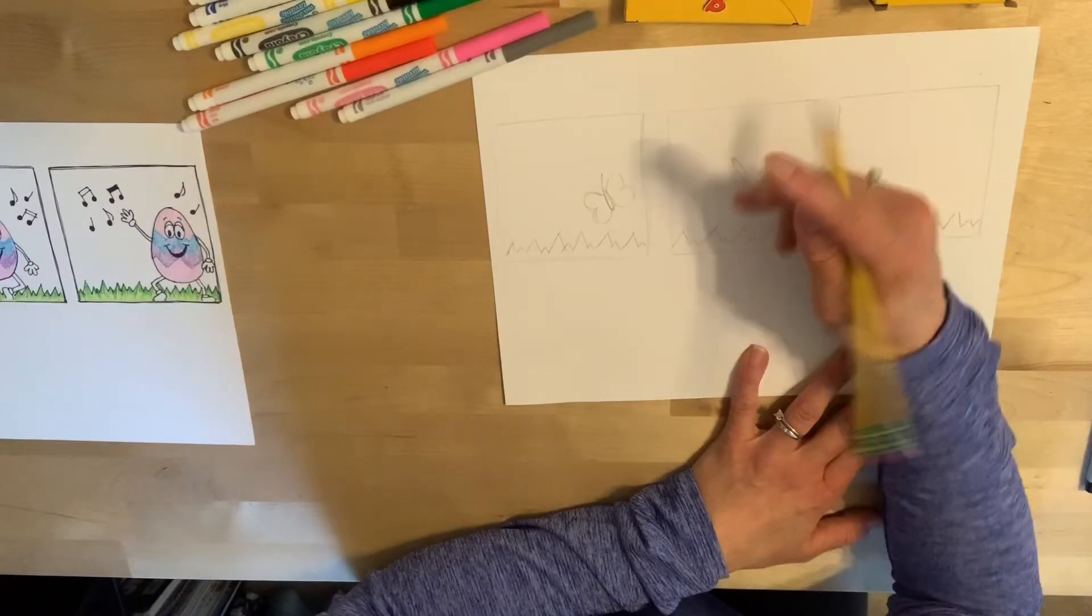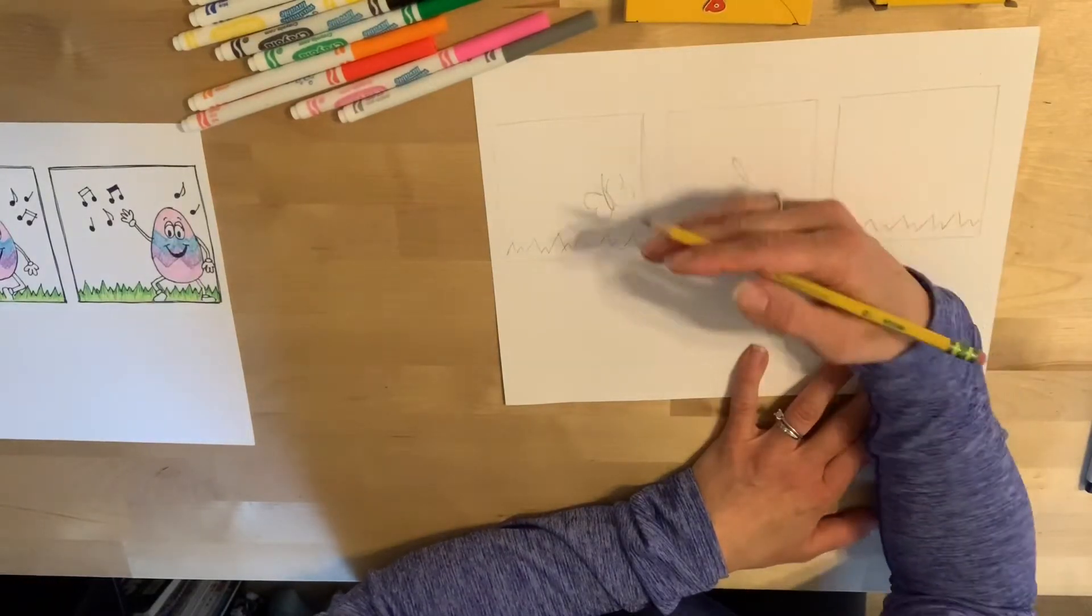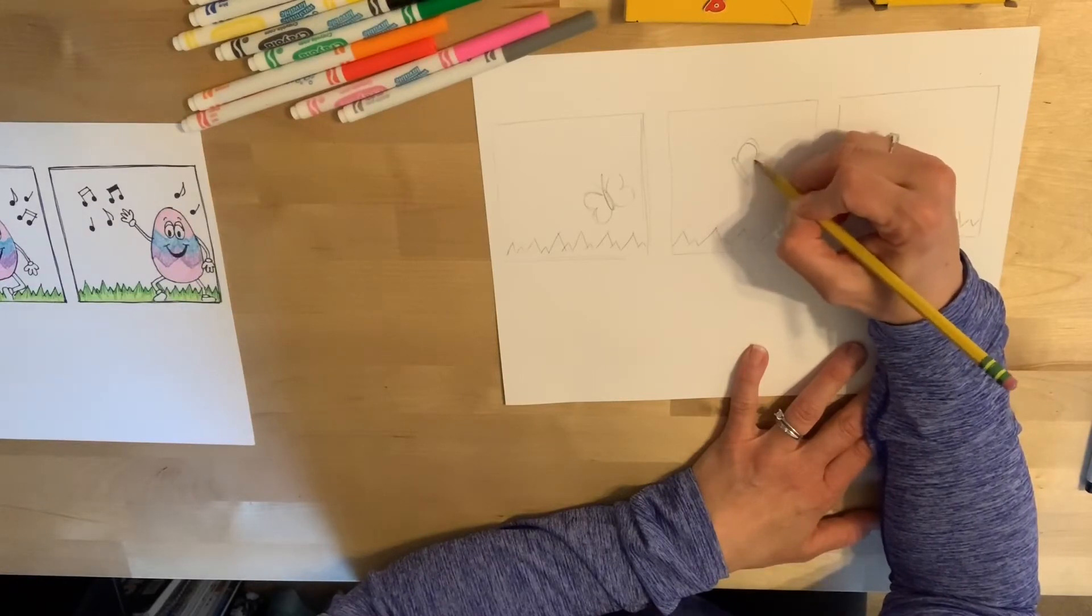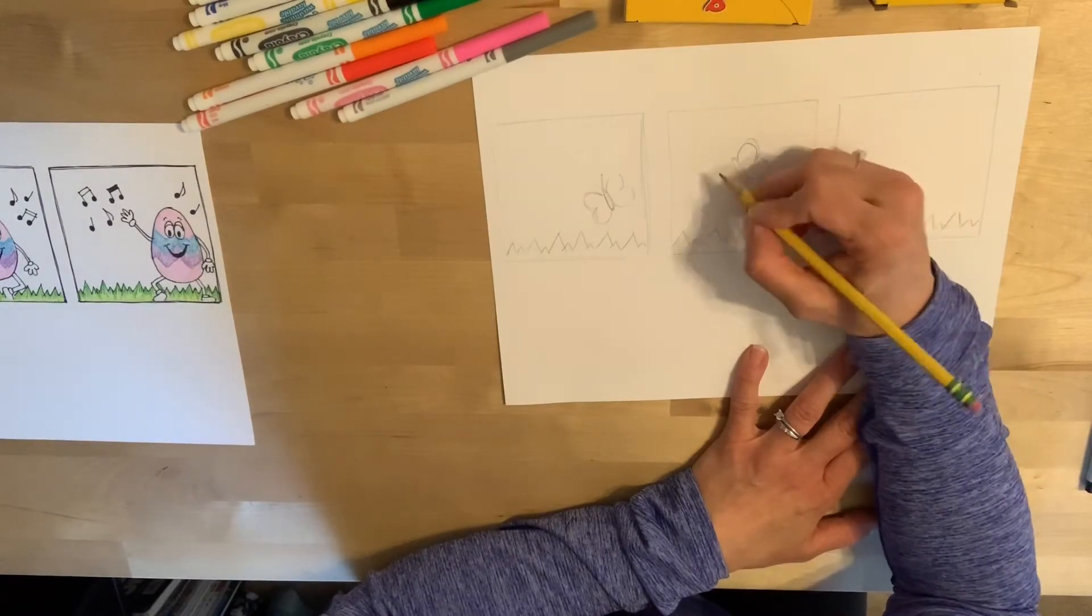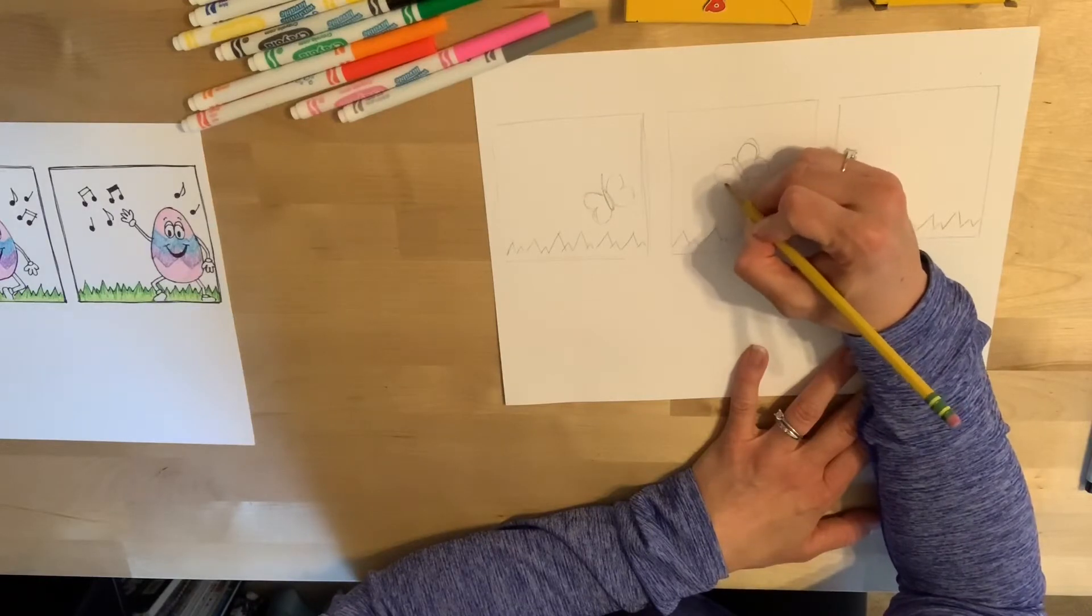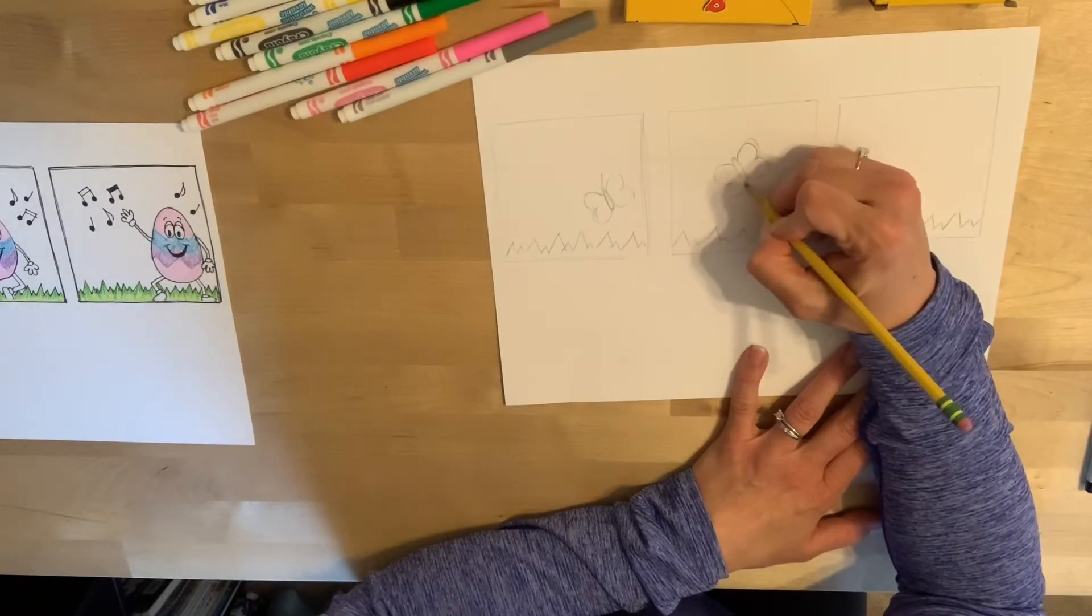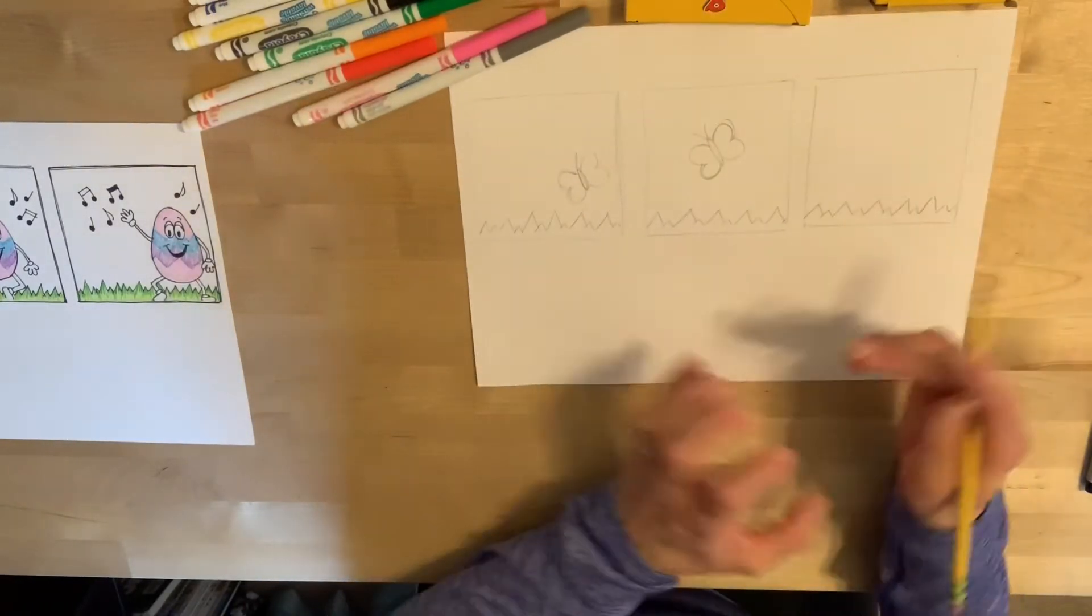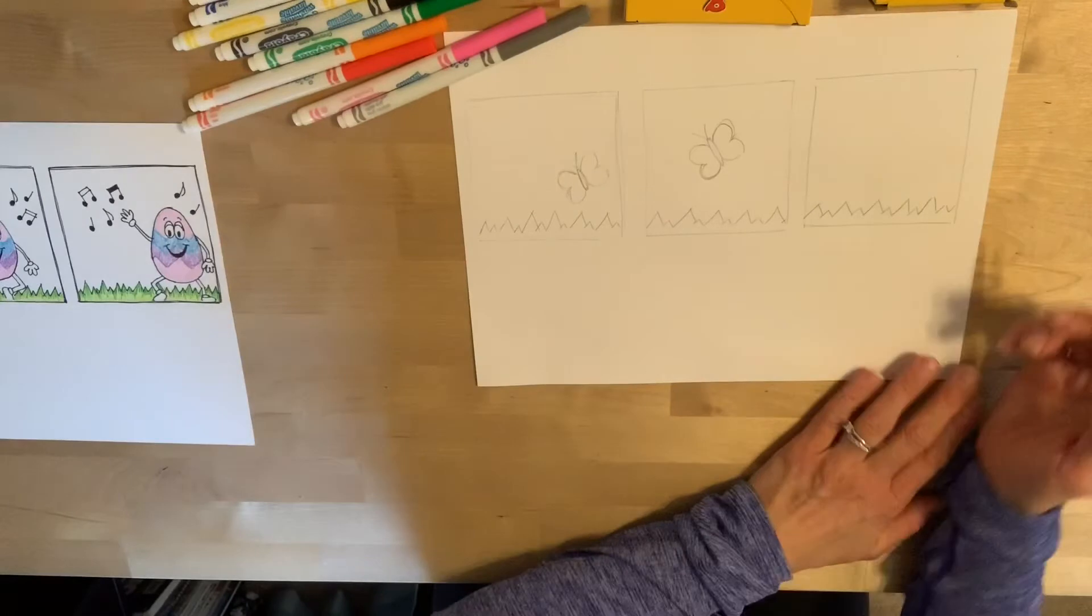And what happens is even though we haven't drawn the butterfly moving up, we don't have video of the butterfly moving up, your brain puts together that the butterfly has moved up there all on its own. Okay, so your brain is putting together those little spaces in between each picture.